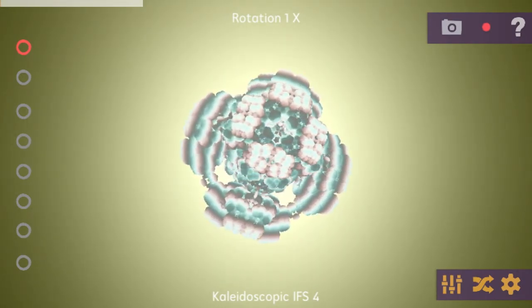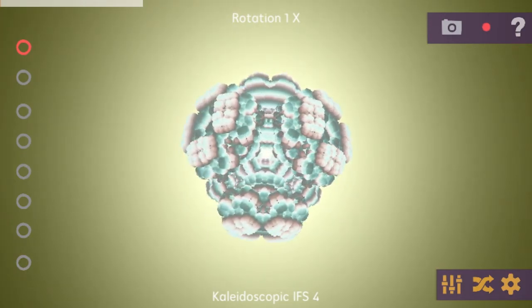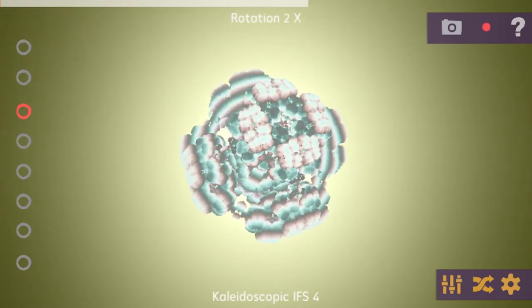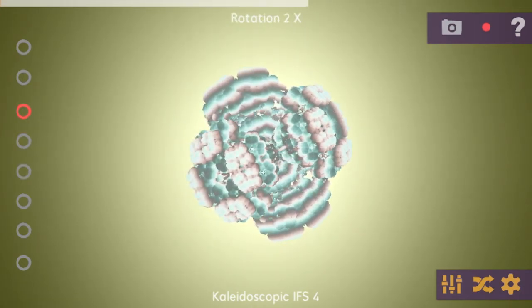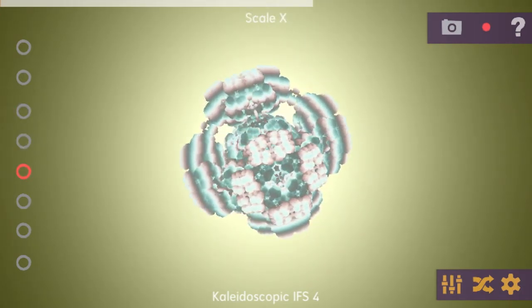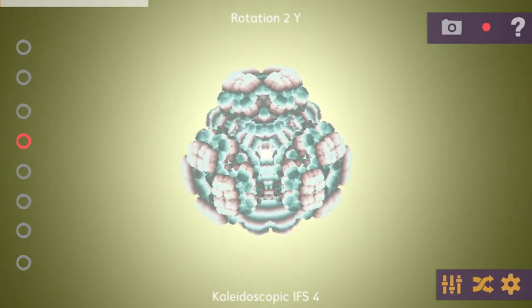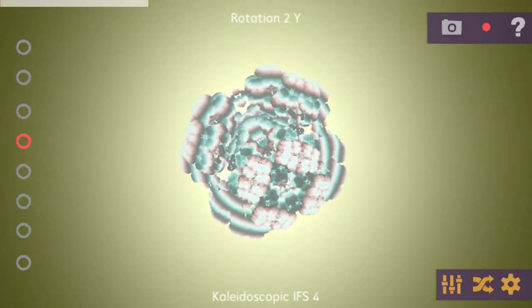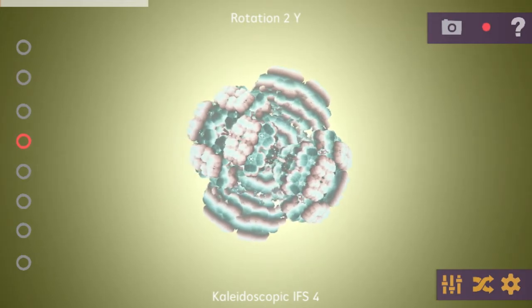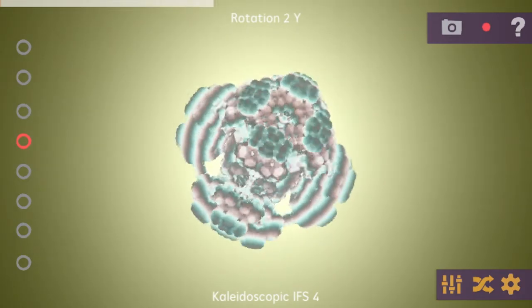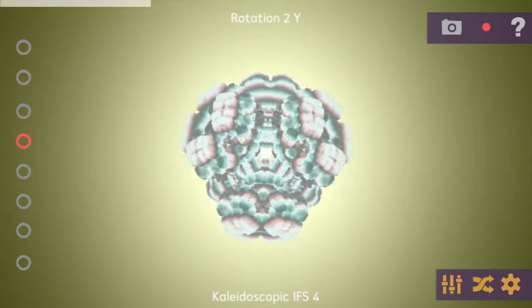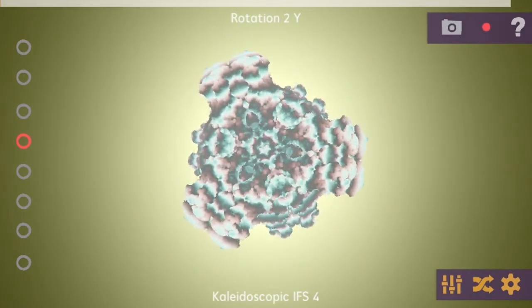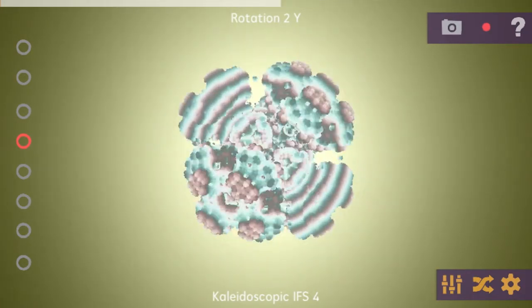One of the most important features is on the left side — all those buttons are the parameters you can select. When you select a certain one, the name of the parameter is written on the top. Currently I've selected the rotation to Y, and when I'm sliding gently over the screen I'm adjusting this parameter, which also leads to a different look of the Fractale.